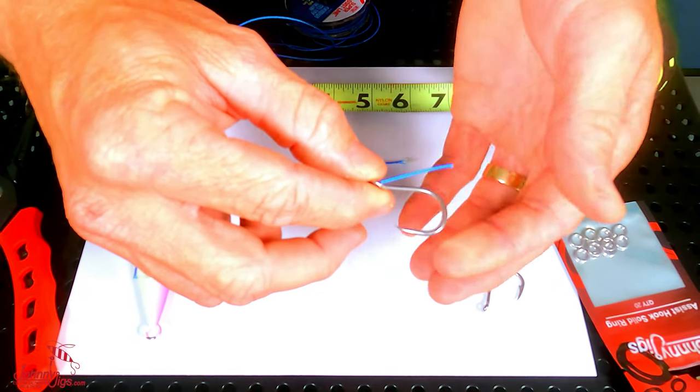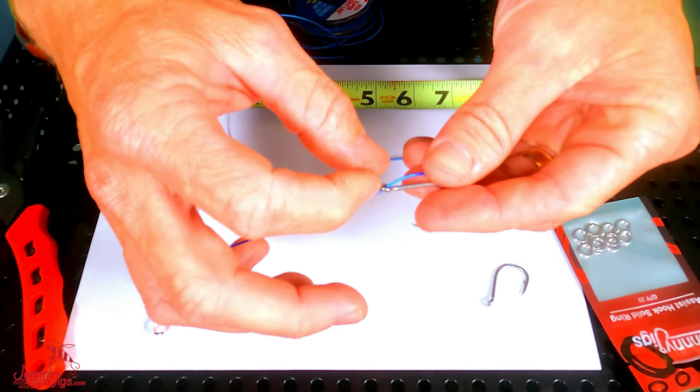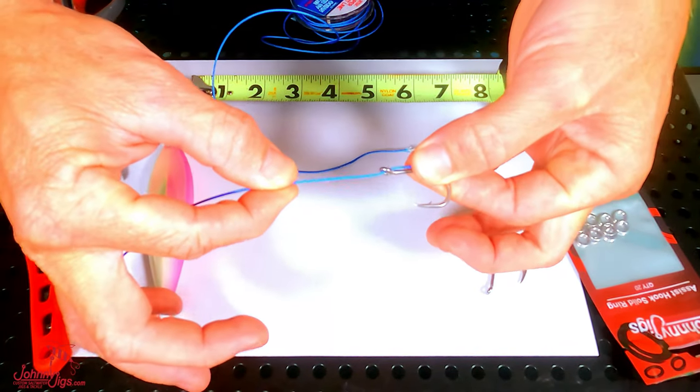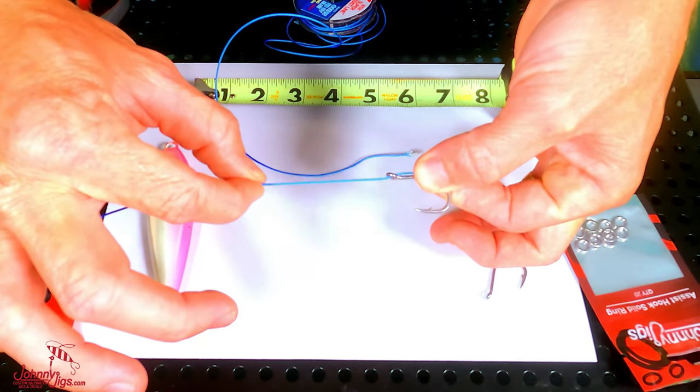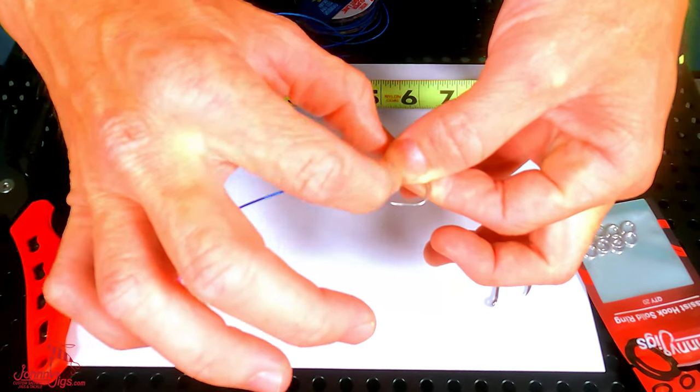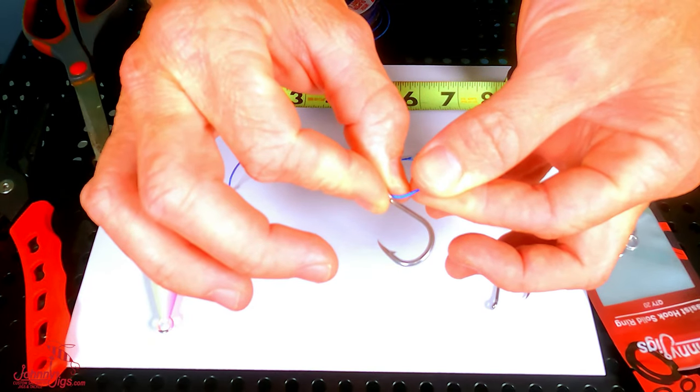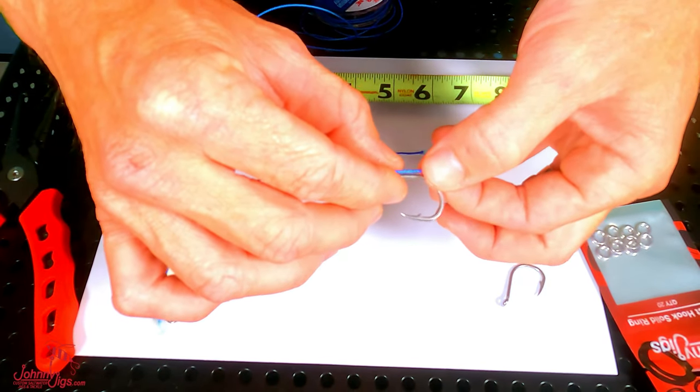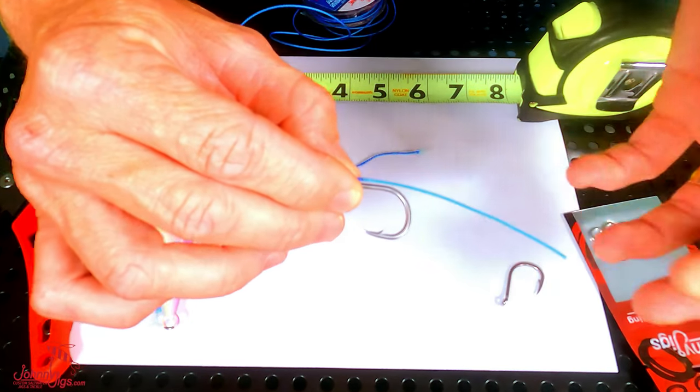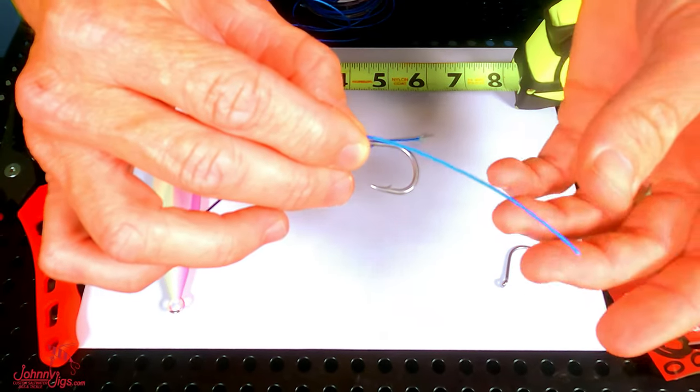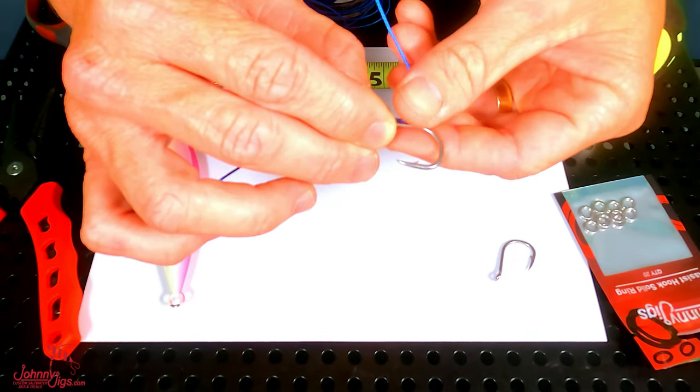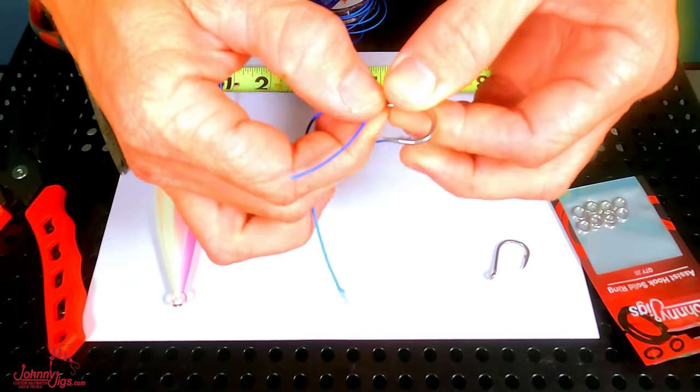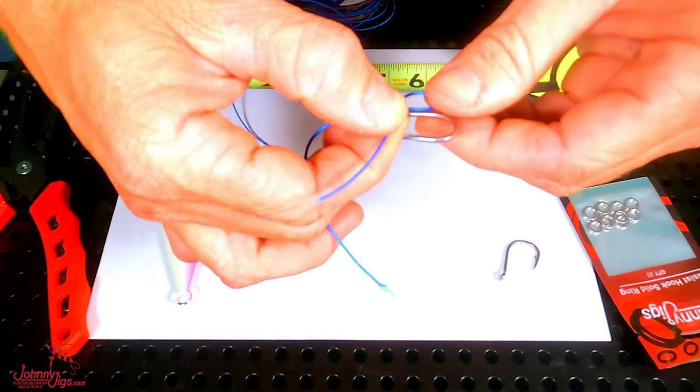We're gonna take this cord and run it through the top of the eye on the assist hook. I like hooks that have the eye bent back a little bit, and that way whenever you finish the hook, it actually gives you a nice straight presentation on it. You're gonna go right through the top hole, pull out a pretty good amount of line on the end so you could tie your knot, and then you're gonna do a loop in it just like so.